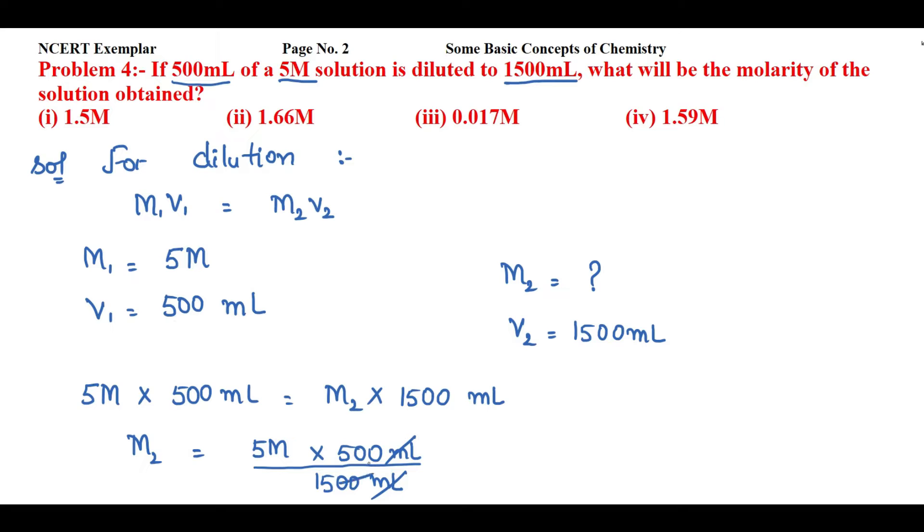I will cancel this mL with this, these two zeros with this, 5 and 1, the 5 and 5, 3 the 15. So 5 divided by 3, it will be 1.66, and answer will be molar. According to that, second option is the correct one.